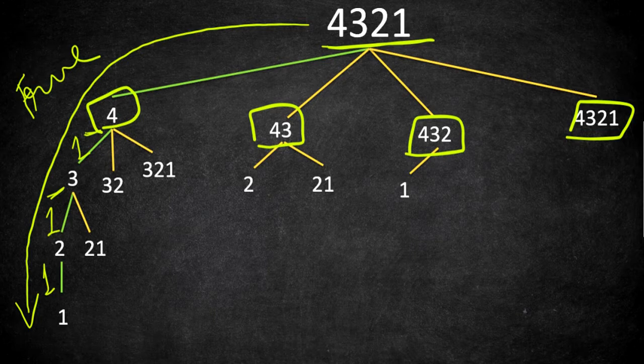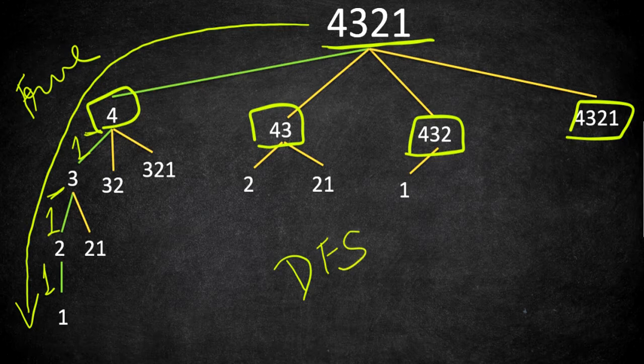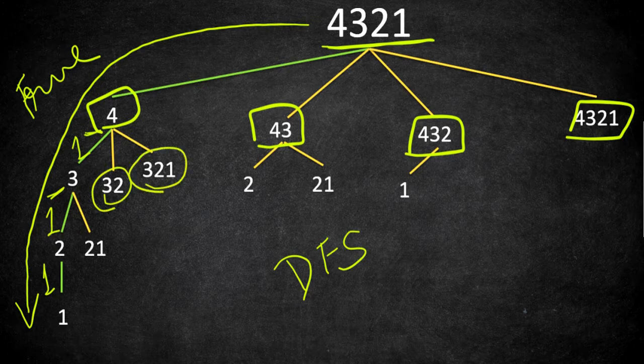Which traversal should we choose — BFS or DFS? Here we want to go deep, all the way to the last node of a tree, to find whether the complete string satisfies the criteria, so we will do a basic DFS. You might wonder: if our first number is 4, a one-digit number, then the next decreasing number must be one digit or fewer. If it is a two-digit number then the next decreasing number must be two digits or one digit — it cannot be more. So why are we considering a two-digit or three-digit number for its children? In this case it is invalid obviously.